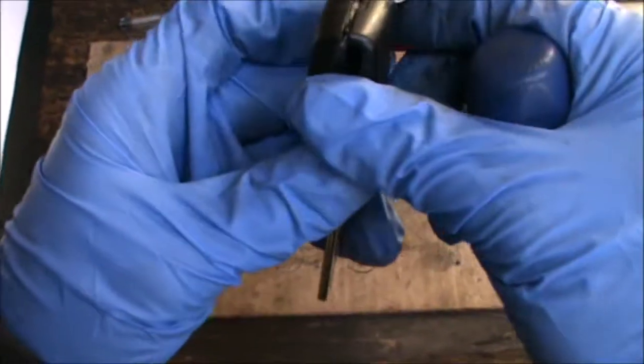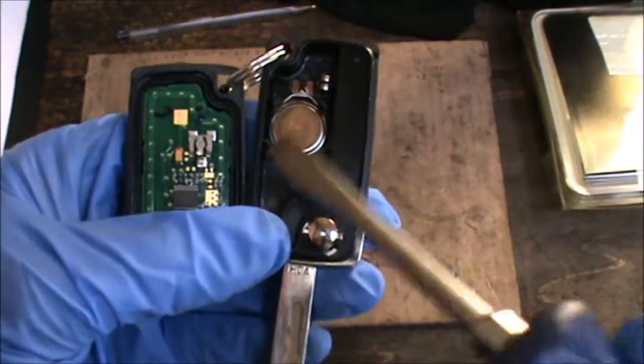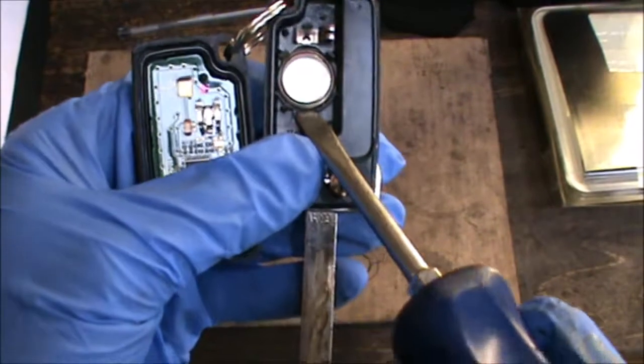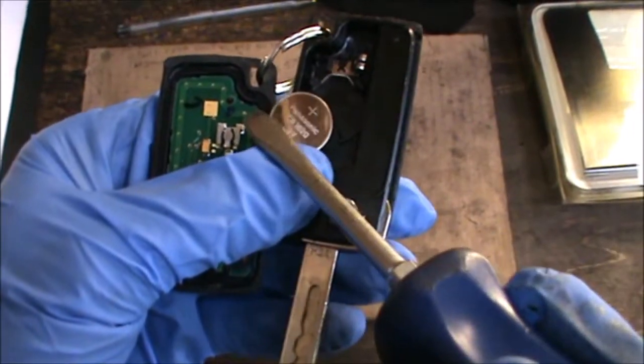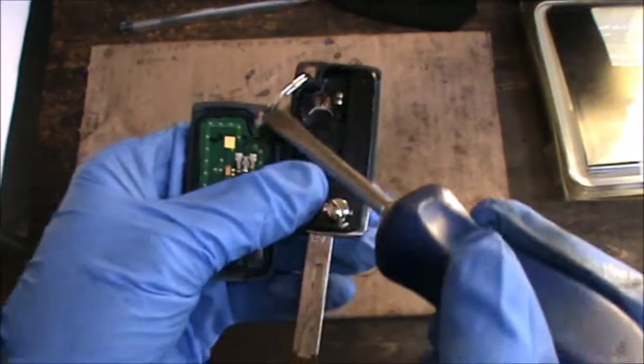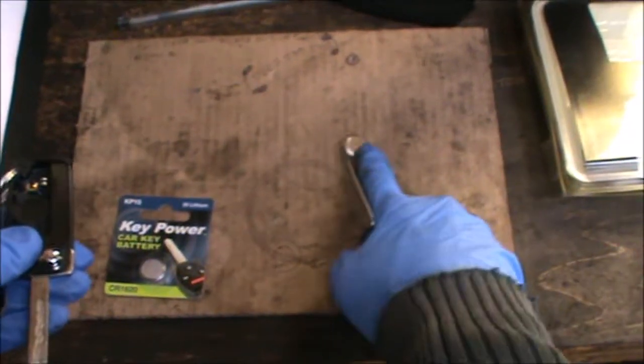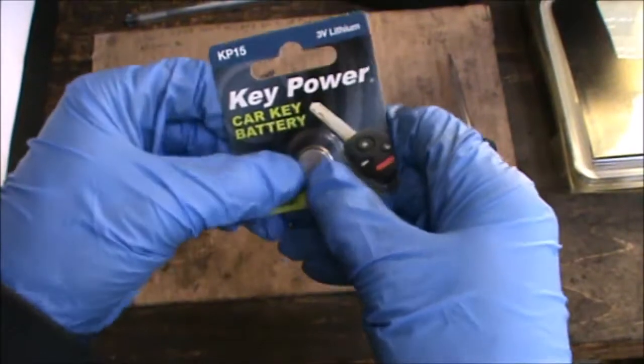You can just twist it and pop this open. In there you find the little battery. Again, just get it out. That is a CR 1620. Get your new battery.